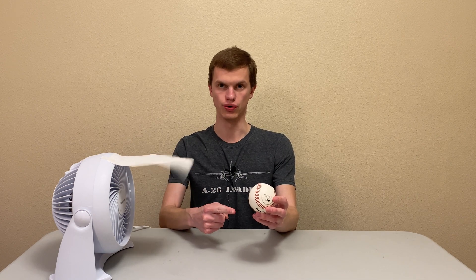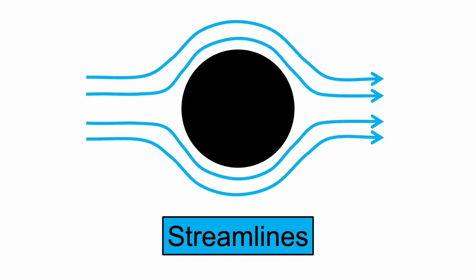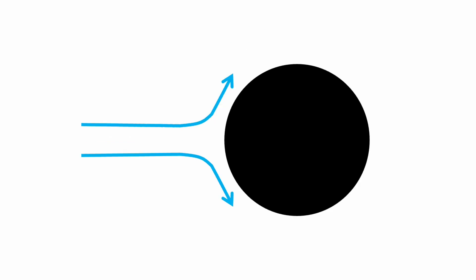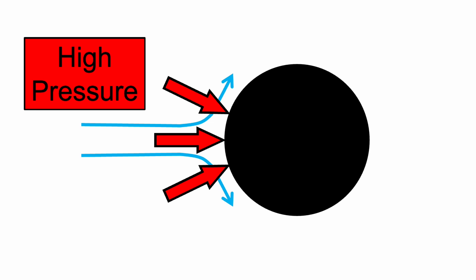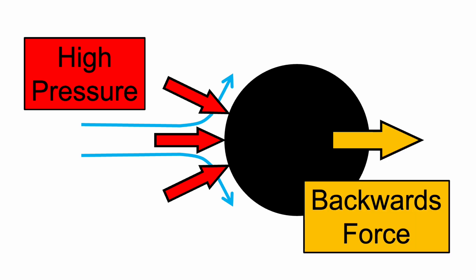Now let's consider an object moving through the air. It often helps to imagine the object is holding still while the air moves past it. We use arrows called streamlines to illustrate the path of air flowing around an object. As the air flows past it, some is forced to change direction. According to Newton's first law, the object must exert a force on the air to change its direction, and by Newton's third law the air exerts an equal and opposite force back — so the pressure at the front of the object will be greater than atmospheric pressure, creating a net backwards force.